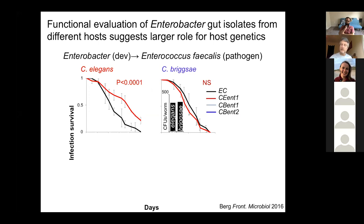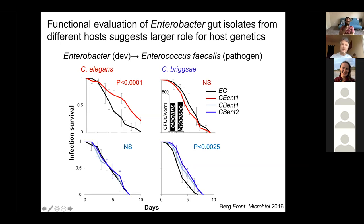This suggested that the commensal from C. elegans has a species-specific contribution. We found isolates from C. briggsae that protected C. briggsae but not C. elegans — its non-cognate host. So we have members of the Enterobacter species that by 16S sequencing would appear identical, but they are functionally different: some provide protection for their host but not the other. This suggests the Enterobacteriaceae family may be comprised of different strains doing different things, and the genetic contribution to the microbiome is greater than what sequence analysis alone reveals.